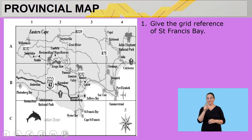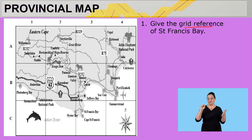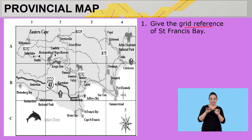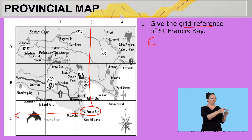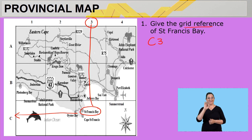Question one says: give the grid reference of Saint Francis Bay. I need to find Saint Francis Bay and indicate its grid reference. Since it's a bay, it will be close to the sea. Here is Saint Francis Bay. Looking at the grid, that gives us C3. So the grid reference of Saint Francis Bay is C3.